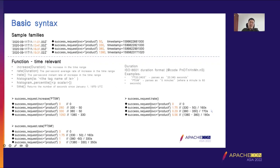Rate is the per-second average rate of increase over the time range, so it divides the value by the time range in seconds. I-rate is the per-second instant rate of increase over the time range. Because it's the instant rate, the calculation subtracts the latest metric value and divides by the time range in seconds.